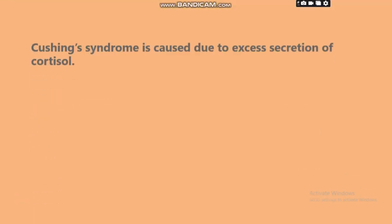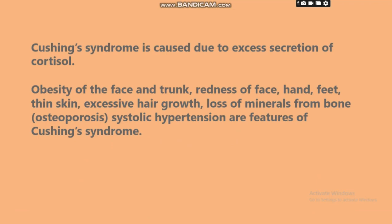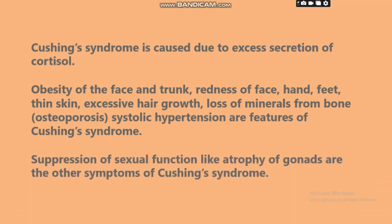Cushing's syndrome is caused due to excess secretion of cortisol. Obesity of the face and trunk, redness of face, hands and feet, thin skin, excessive hair growth, loss of minerals from bone, systolic hypertension, and suppression of sexual function like atrophy of gonads are the features of Cushing's syndrome.